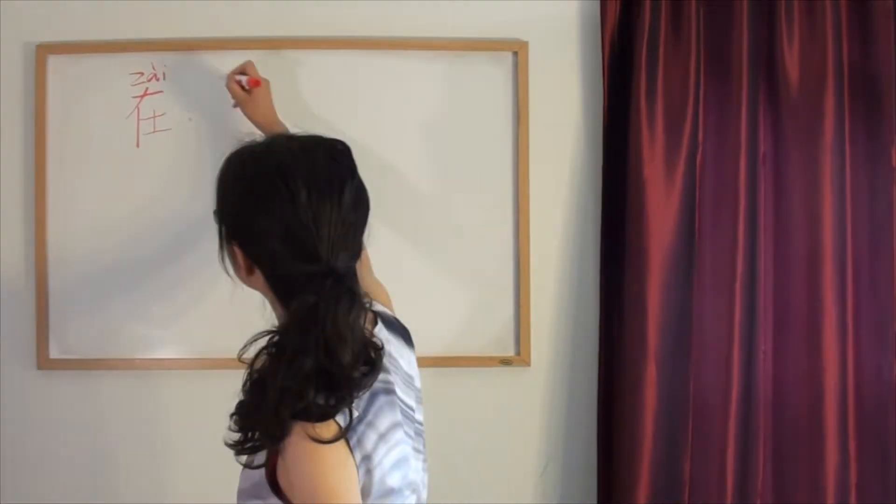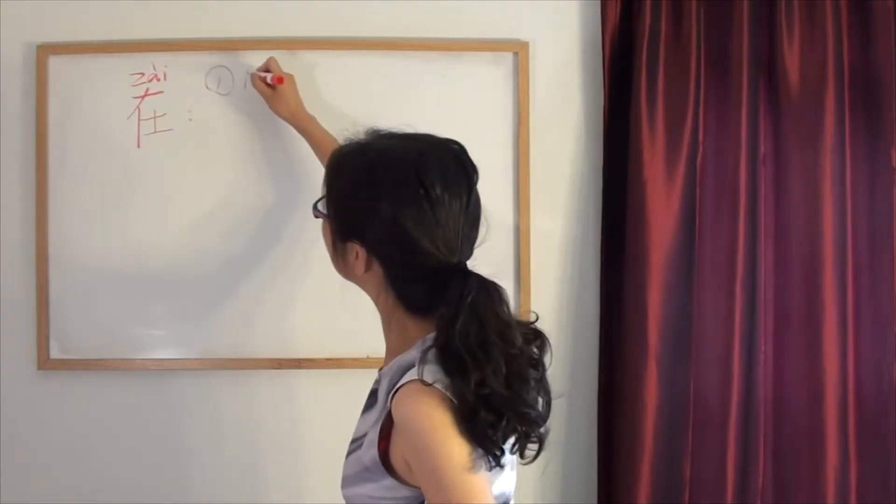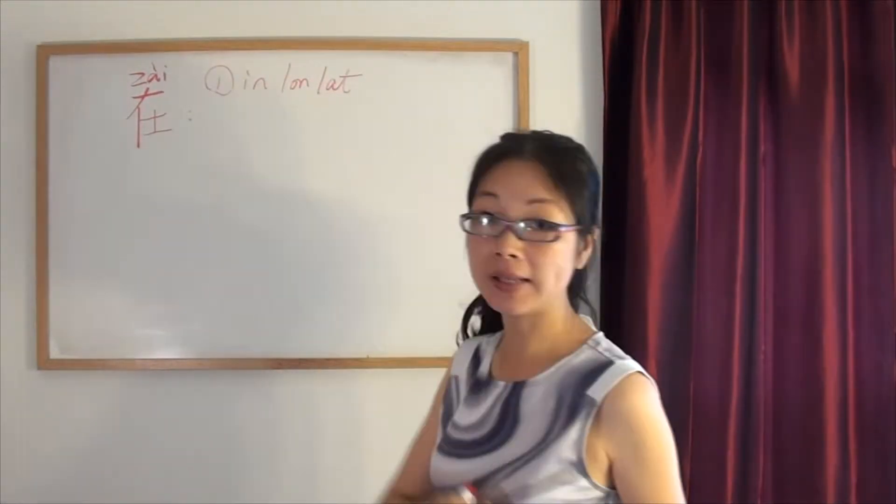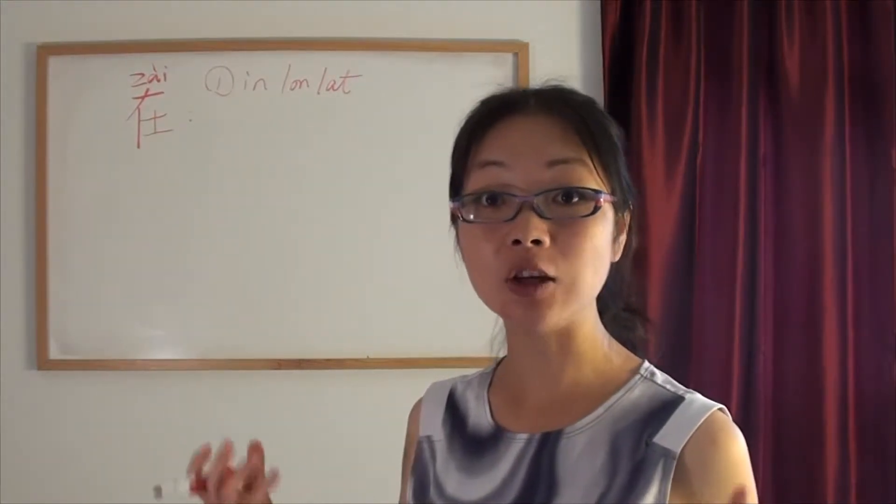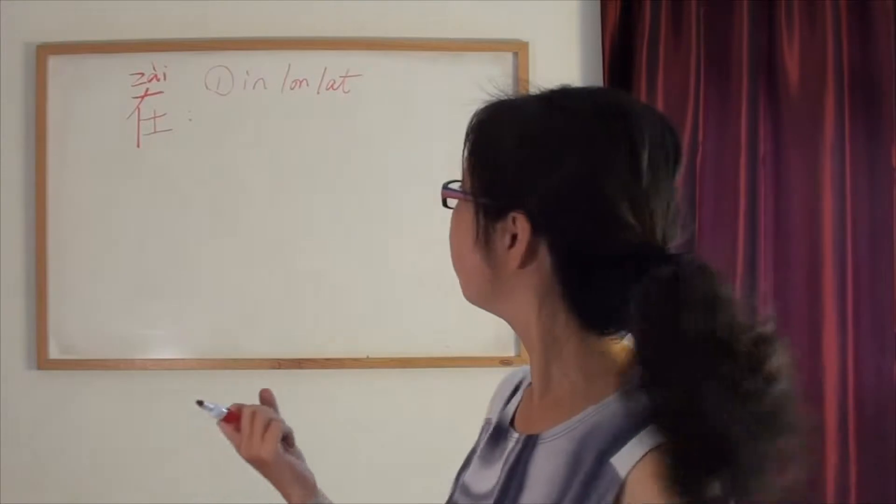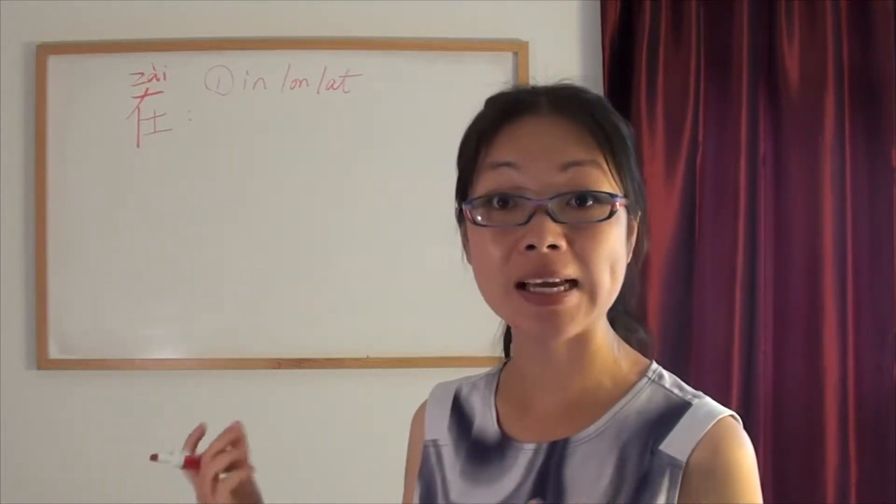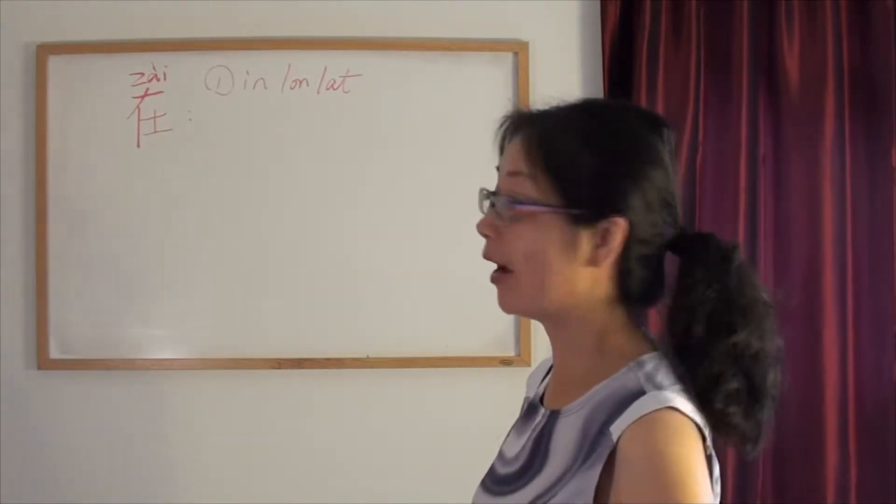First thing is the meaning of 再: in, on, or at. So when you say I'm in China, how to say that? 我在中国。I'm at home, 我在家。So the first meaning of 再 is in, on, or at.